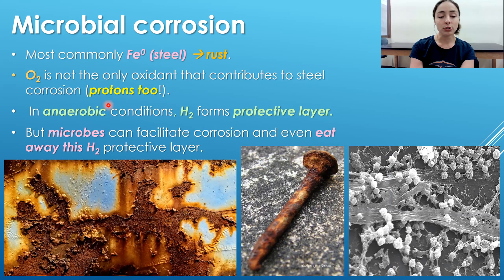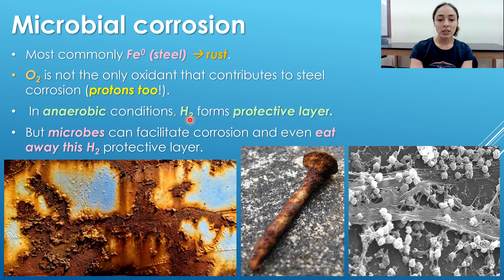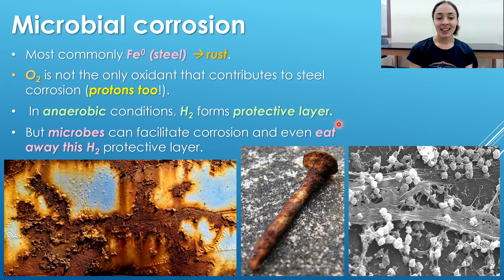Oxygen is not the only thing that contributes to steel or iron corrosion — protons can also accept electrons and oxidize iron and steel. This is actually the primary method of iron and steel oxidation in anaerobic environments, because with no oxygen present, protons become the primary electron acceptors. They accept electrons, become reduced, and form H₂ compounds that can create a protective layer around the steel, potentially preventing further corrosion.